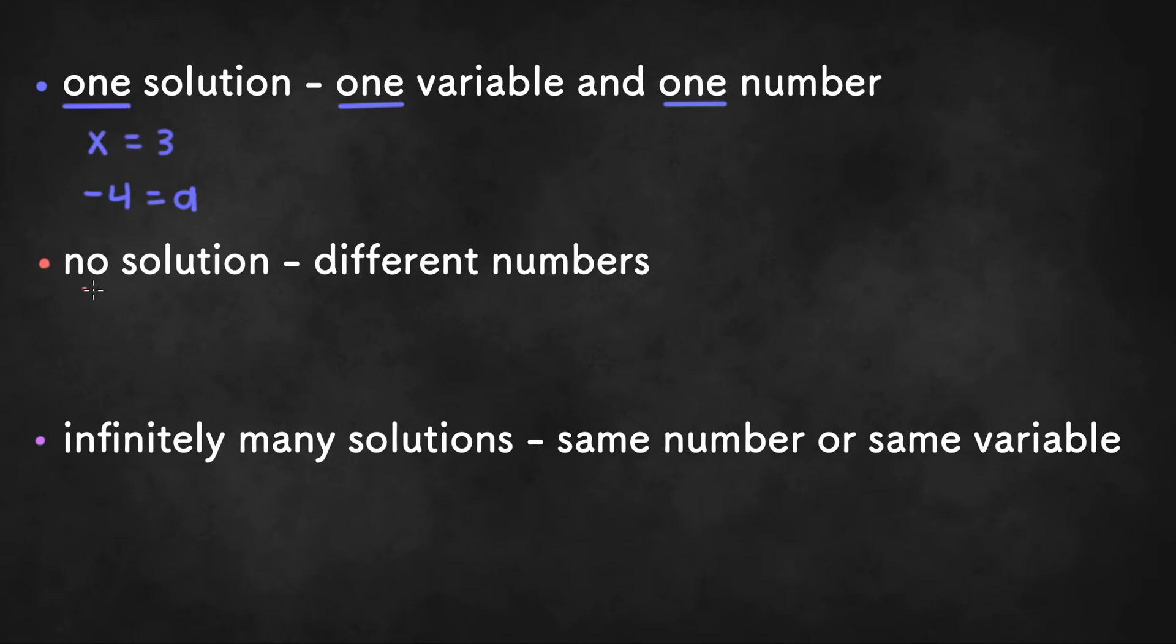If there is no solution to equations, each side of the equal sign will have a different number. Some examples of answers with no solution are 3 equals 4 or 53 equals 11. There is no solution because 3 doesn't equal 4 and 53 doesn't equal 11.